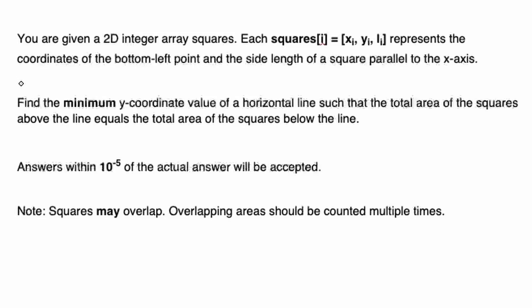Hello everyone. Today we're looking at the problem 'Separate Squares', which was question 2 in bi-weekly contest 150. We're given a 2D integer array of squares, where each square has three elements: its x-coordinate, y-coordinate, and its length. This coordinate is the bottom-left point and the side length of that square. We want to find the minimum y-coordinate value of a horizontal line where the total area above and below the line are equal. Answers can be within 10 to the negative 5 of the actual answer, so we have to try all decimal places up to 5.